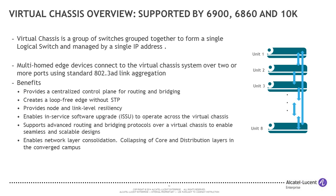On a couple of the charts, you'll have noticed the concept of virtual chassis. Virtual chassis is one of the main reasons our switches like the 6900 and the 6860 can be used to replace a traditional chassis-based environment. Simply put, the idea is to take individual stackable switches, connect them together over dedicated links, and treat them as a single IP address and a single routing entity — allowing you to grow your network flexibly while providing a chassis alternative at a fraction of the cost.